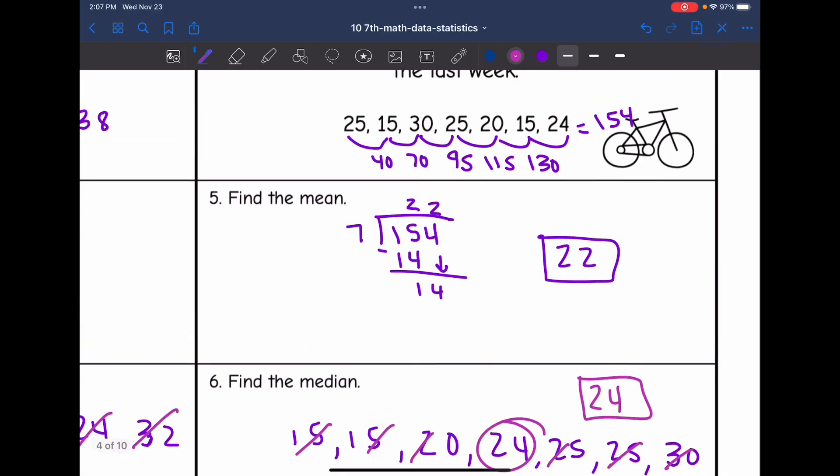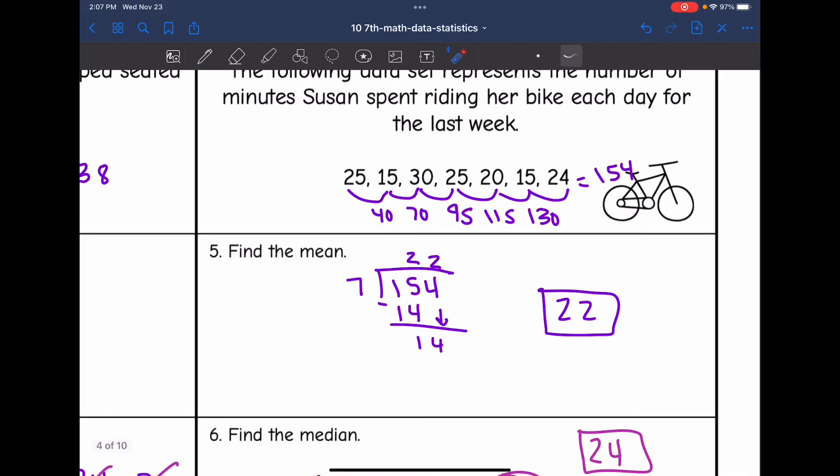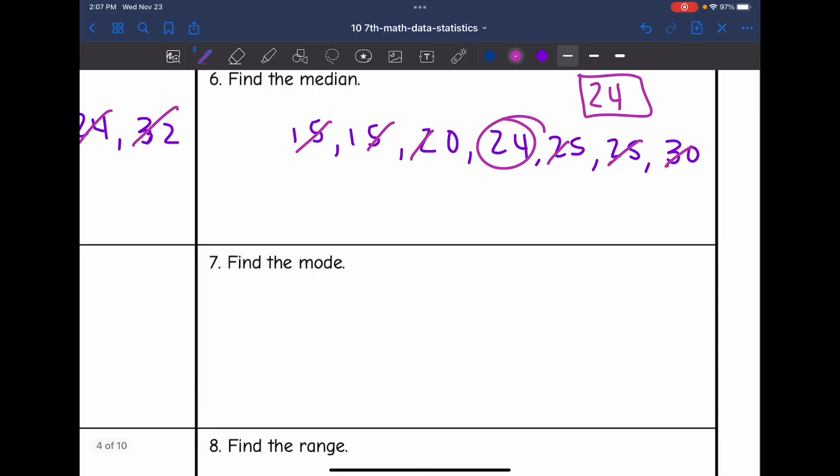Then I want to find the mode, which are the most repeated numbers. 15 is repeated twice and 25 is repeated twice. So I have 2 modes of 15 and 25.